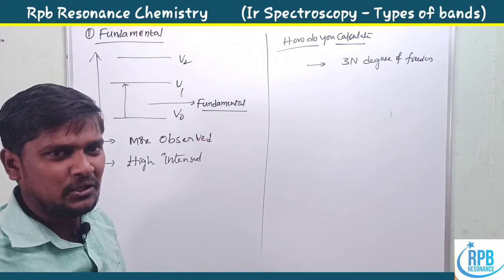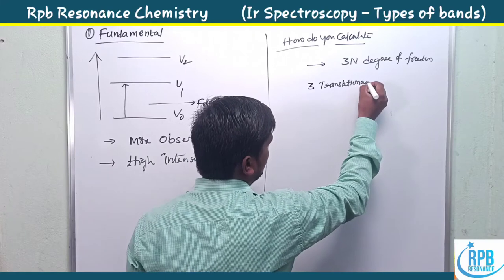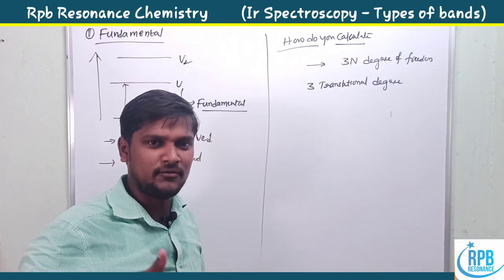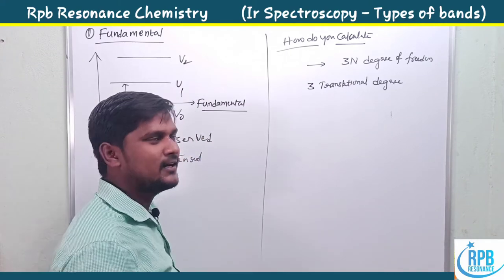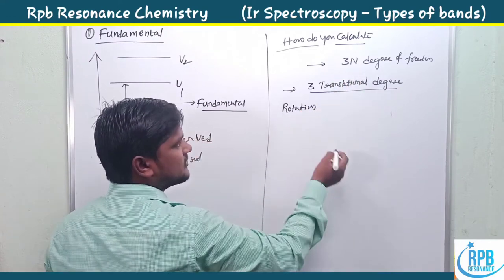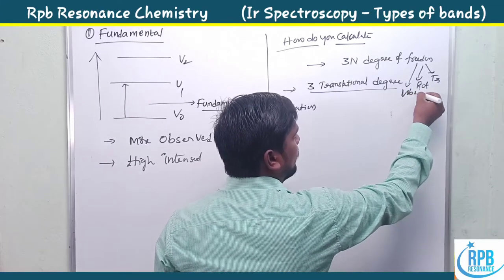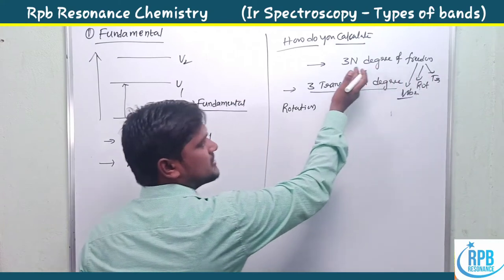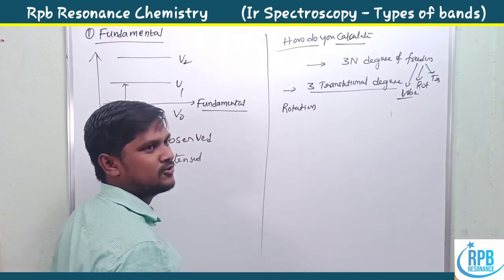The 3N degrees of freedom = translational + rotational + vibrational. What we need to find is the vibrational degrees of freedom. If we know the translational and rotational, we subtract them from 3N to get the fundamental vibrations. So let us discuss the translational and rotational degrees of freedom. Translational degrees are three for any molecule — linear or non-linear — since molecules can move along X, Y, and Z spatial axes.